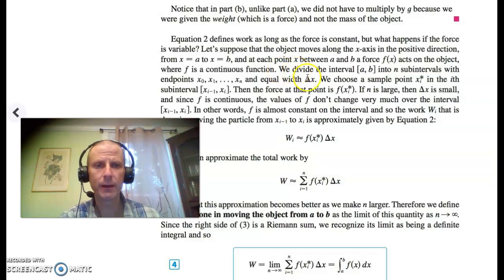Assuming that the force is given by f of x and that is a continuous function, then we can use the classic idea of calculus. We divide our interval a to b up into n subintervals. Over the ith subinterval, we choose a sample point x_i star. And since the function f is continuous, we assume that the force will be constant over that subinterval and equal to f of x_i star.